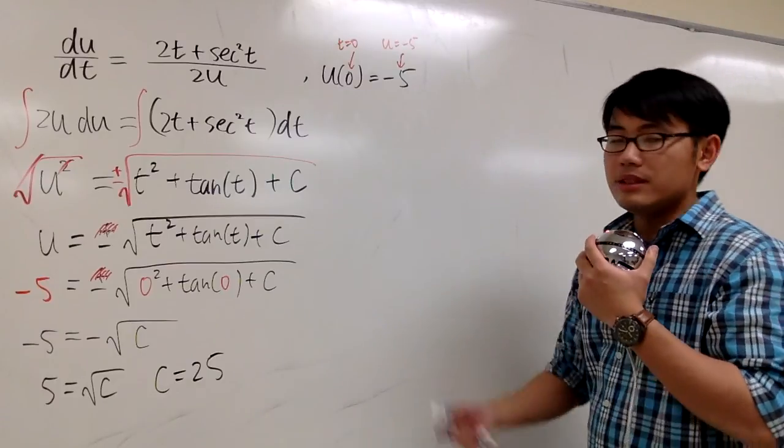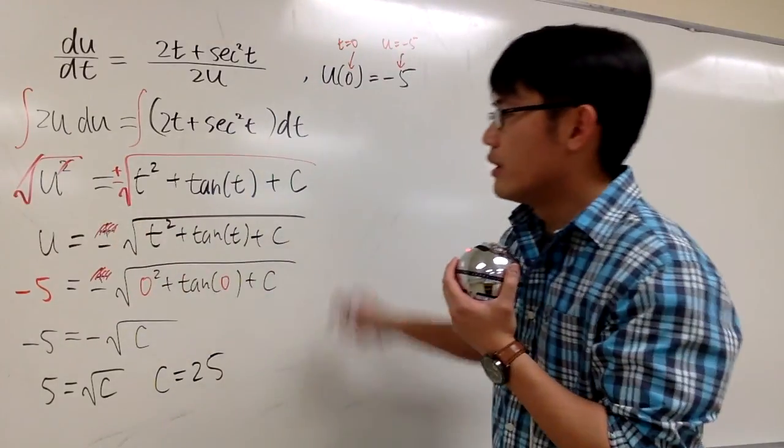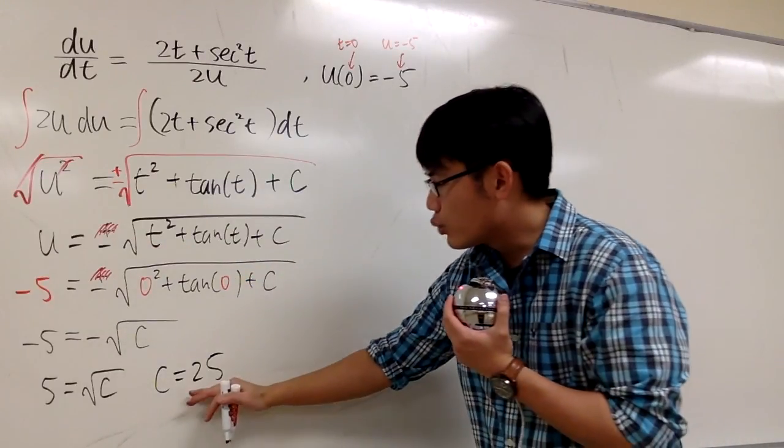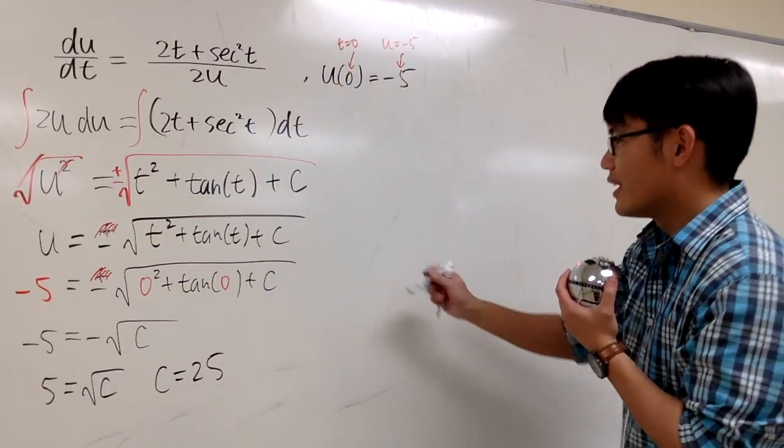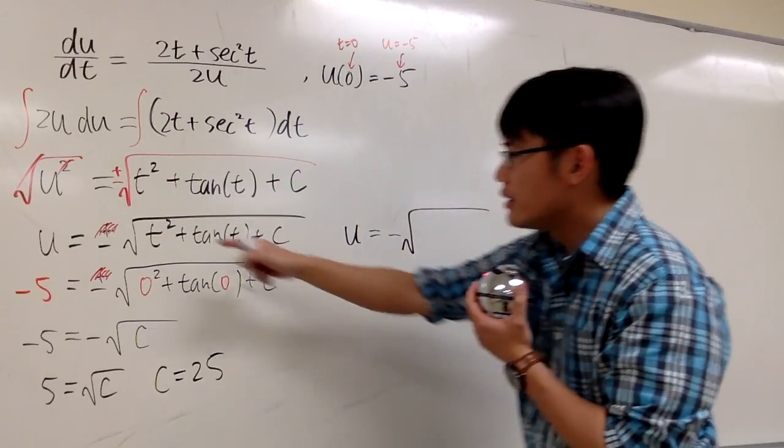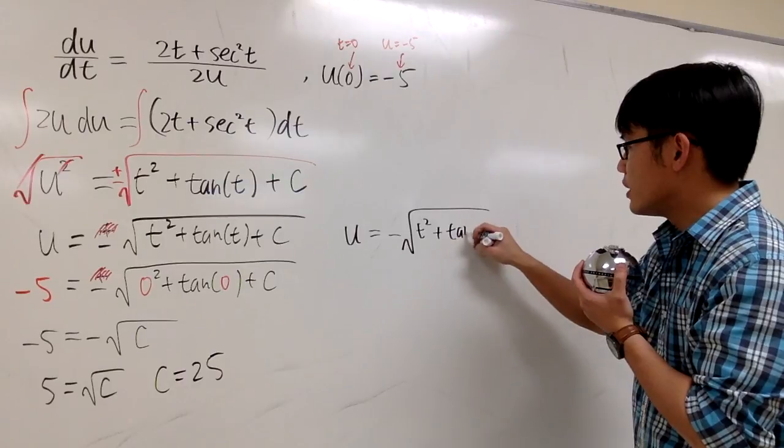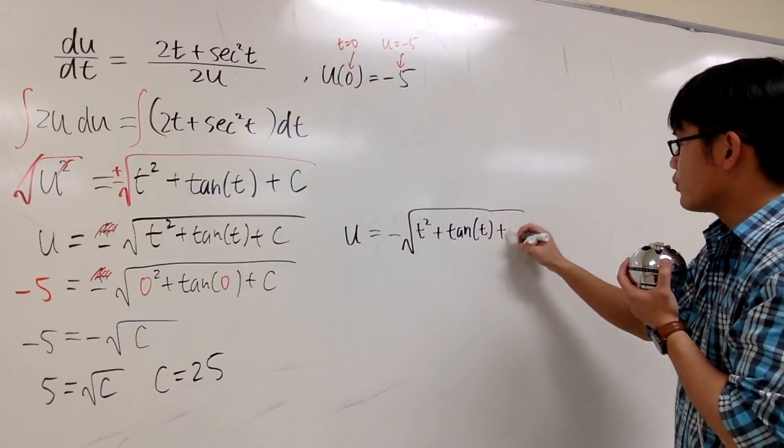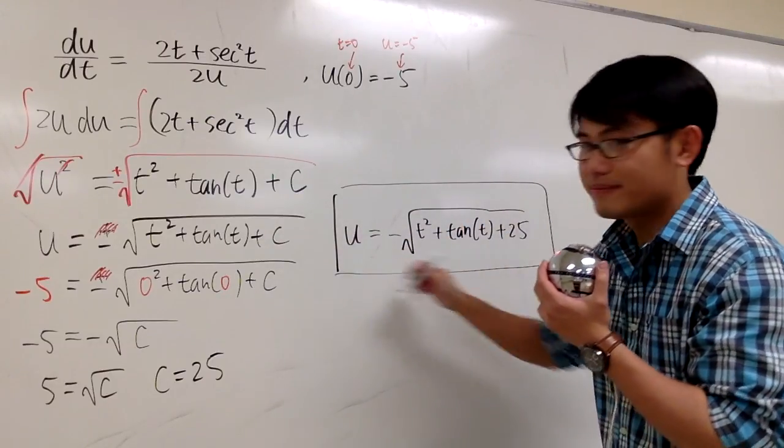Well, we get c, and now this is how we are going to write down the answer. This is the general form, where we got rid of the positive version already. And I just have to plug in 25 into the c right here, and that will be the answer. Here, u will be -√(t² + tan(t) + 25). And this right here is the answer. That's it.